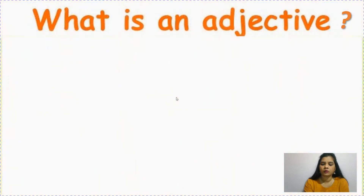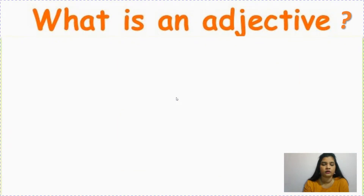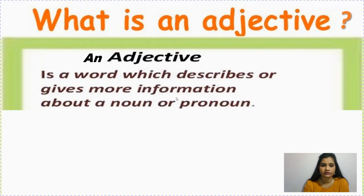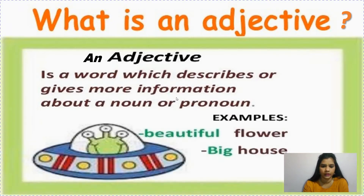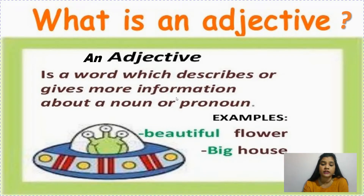Let's see what an adjective is. From the examples, you can tell: any word which is used to describe a noun is called an adjective. An adjective is a word which describes or gives more information about a noun or pronoun. See the example here — 'beautiful flower.' Flower is a noun, and 'beautiful' describes what kind of flower it is, so 'beautiful' is an adjective.